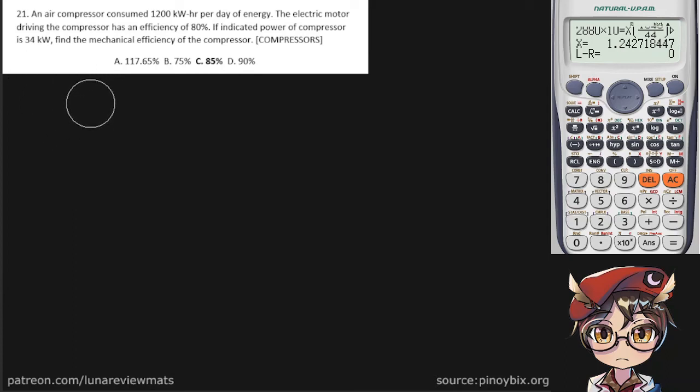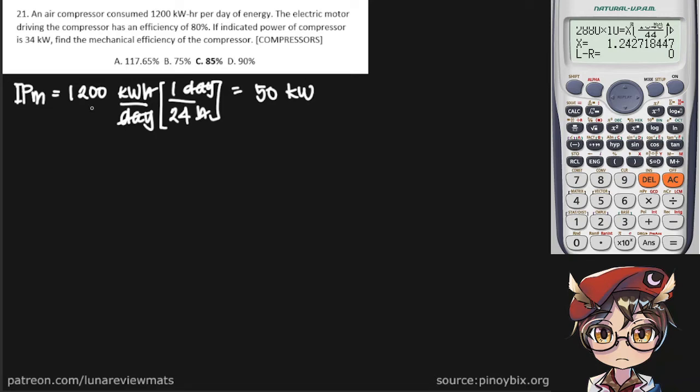An air compressor consumes 1200 kilowatt-hours per day of energy. Let's assume this is the indicated power of the motor per day and then convert that to kilowatts: 1200 kilowatt-hours per day divided by 24 hours per day. These cancel out and it becomes 50 kilowatts. The electric motor driving the compressor...